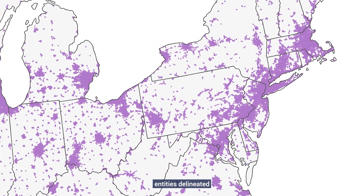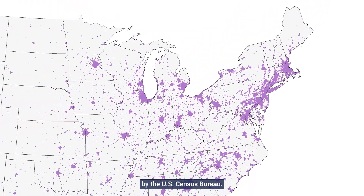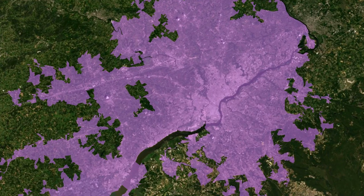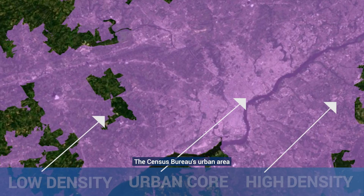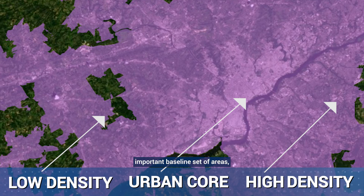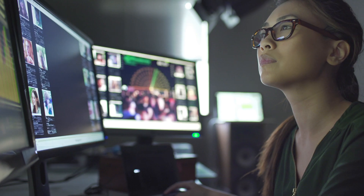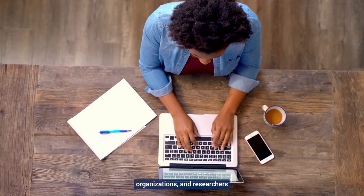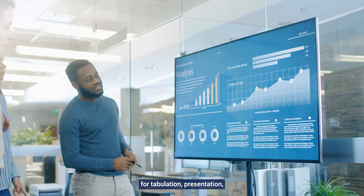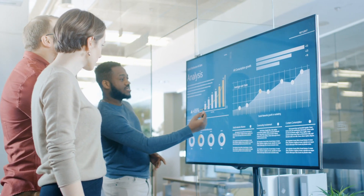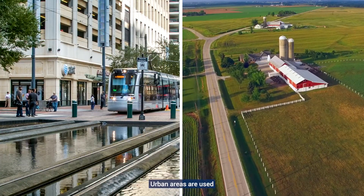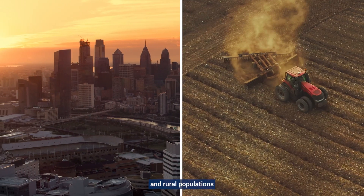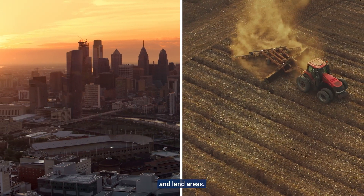Urban areas are geographic entities delineated by the U.S. Census Bureau and are found in every state across the nation. The Census Bureau's urban area classification provides an important baseline set of areas used by a variety of federal agencies, organizations, and researchers for tabulation, presentation, and analysis of data. Urban areas are used to analyze changes in the distribution and characteristics of urban and rural populations and land areas.